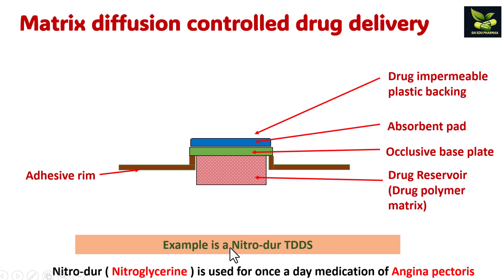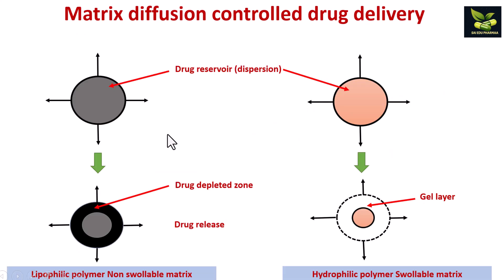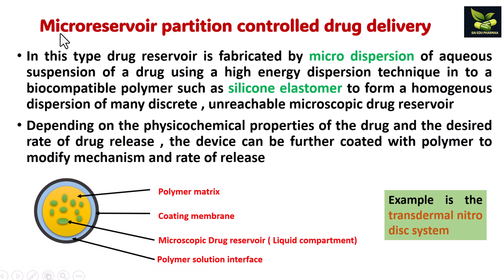Nitrodur — that is nitroglycerin — is used for medication of angina pectoris. In the diagram you can see the drug reservoir and the delivery system. The mechanism of matrix diffusion control shows the drug reservoir, the drug-depleted zone, and the drug region.